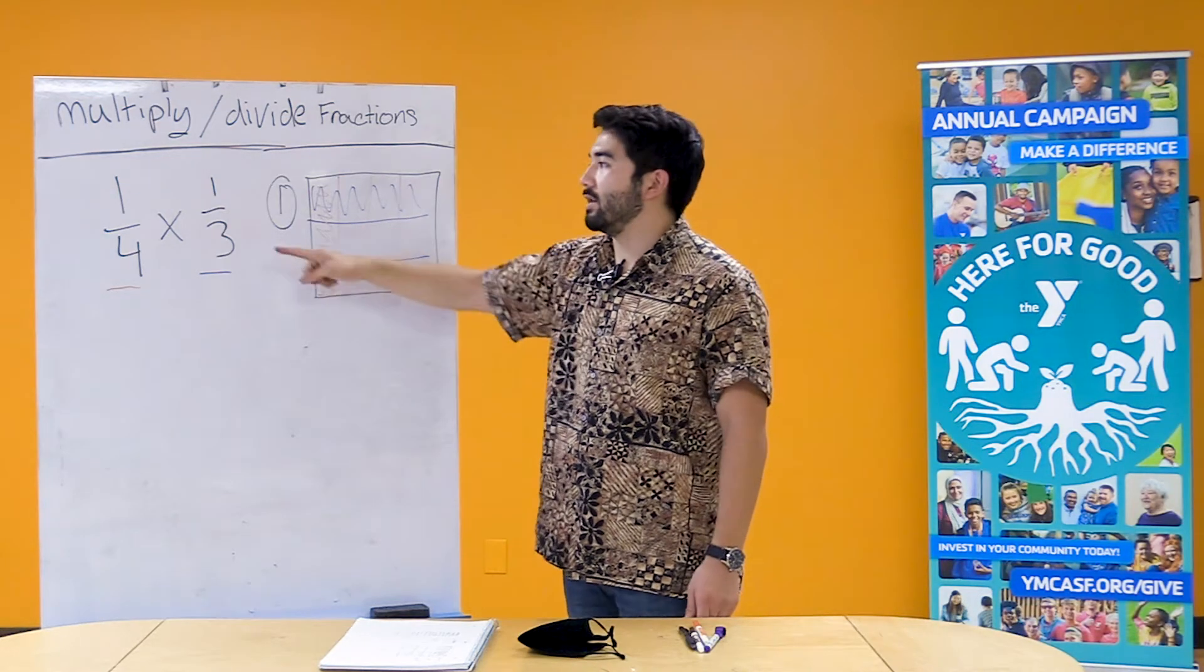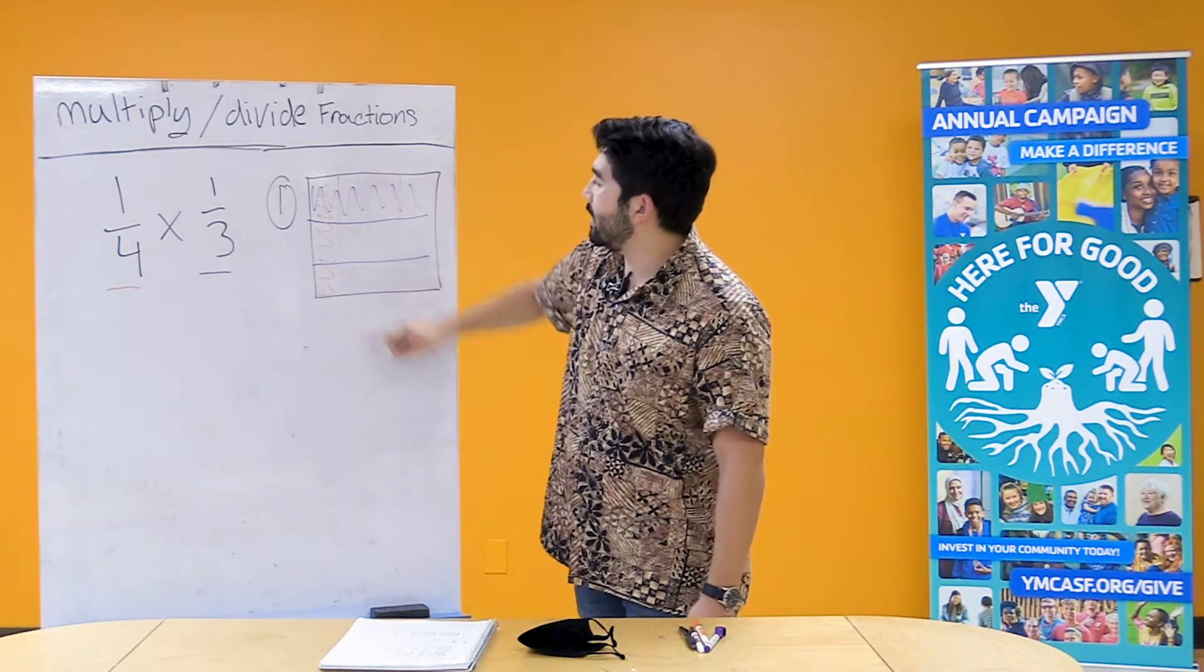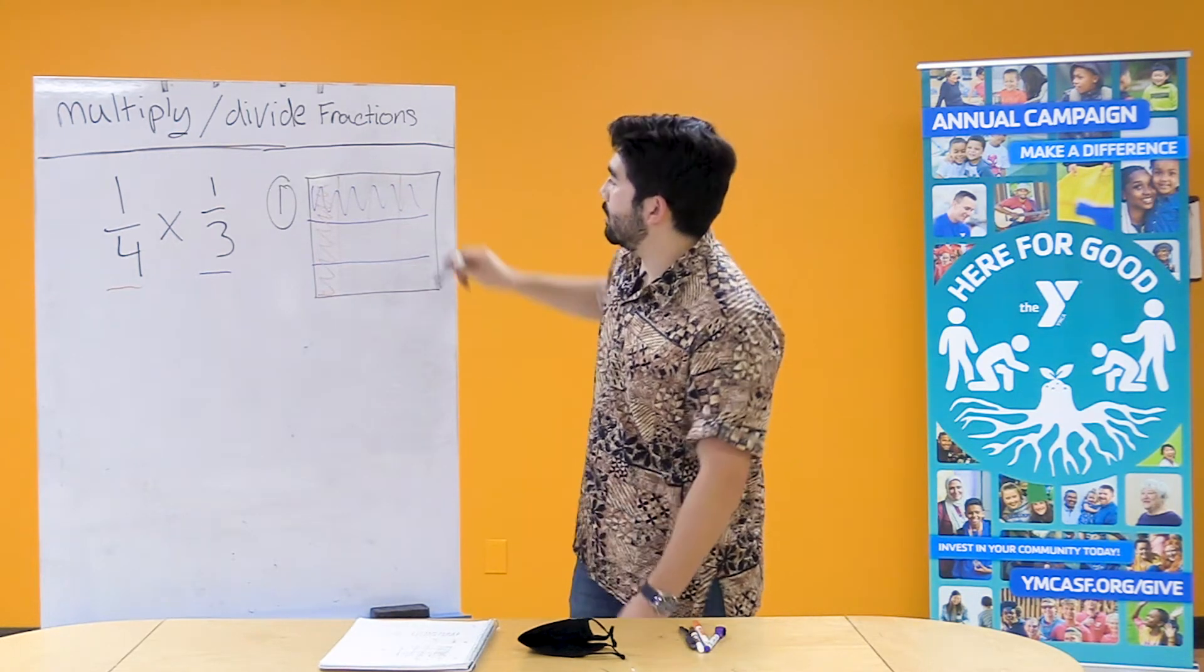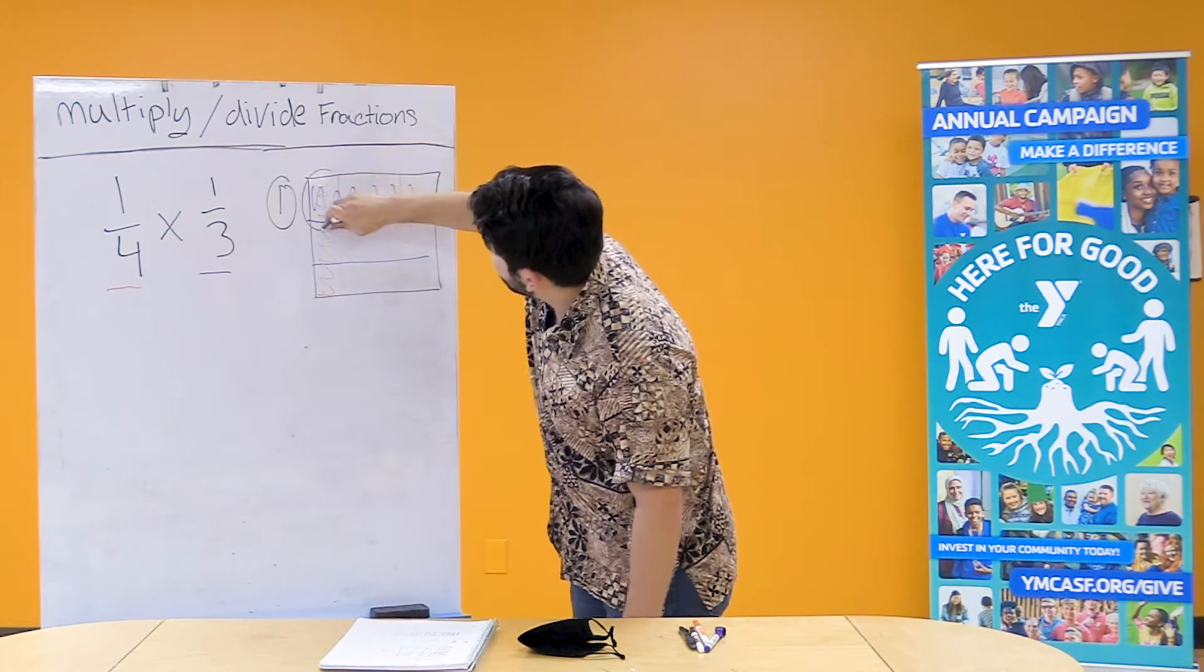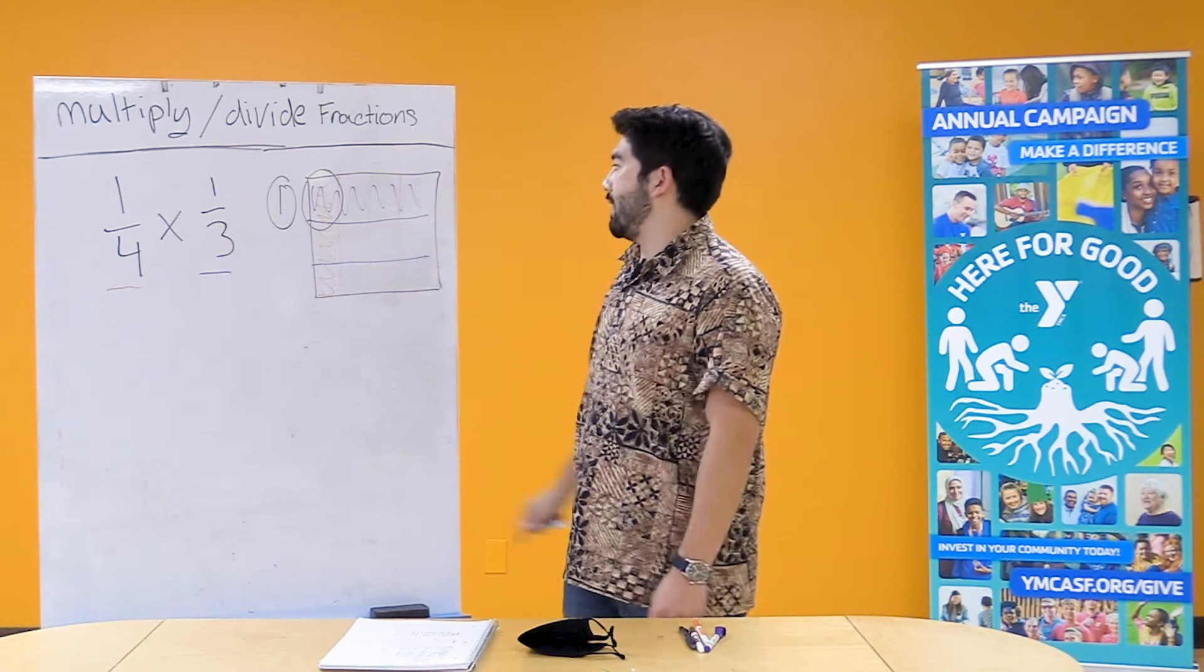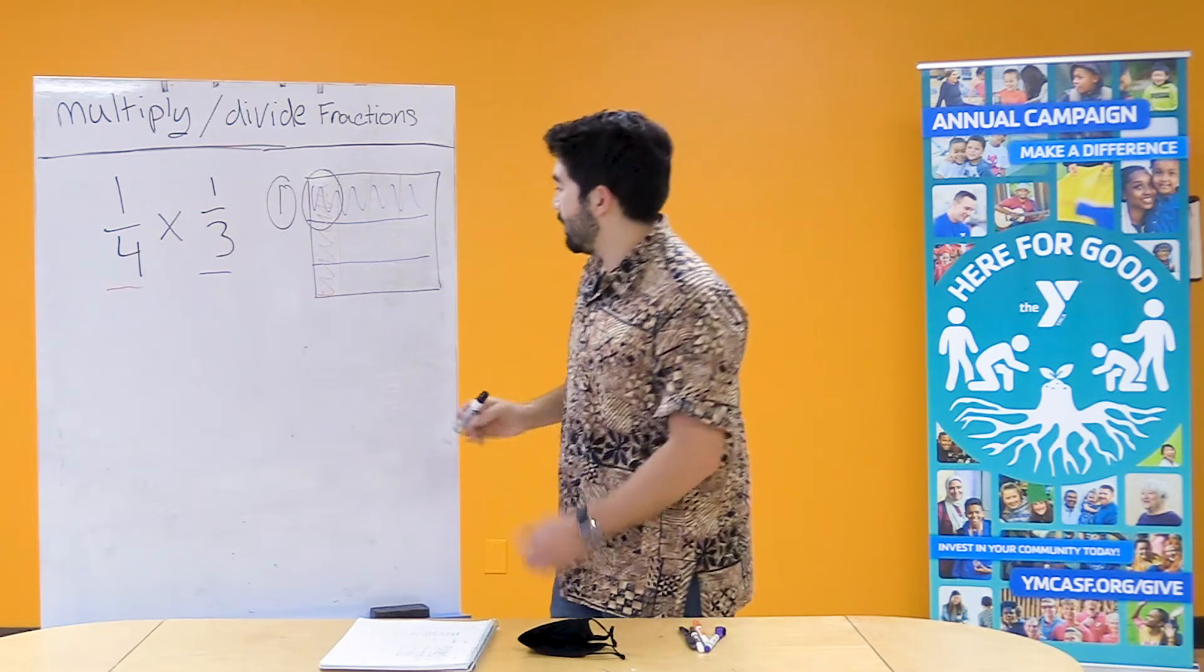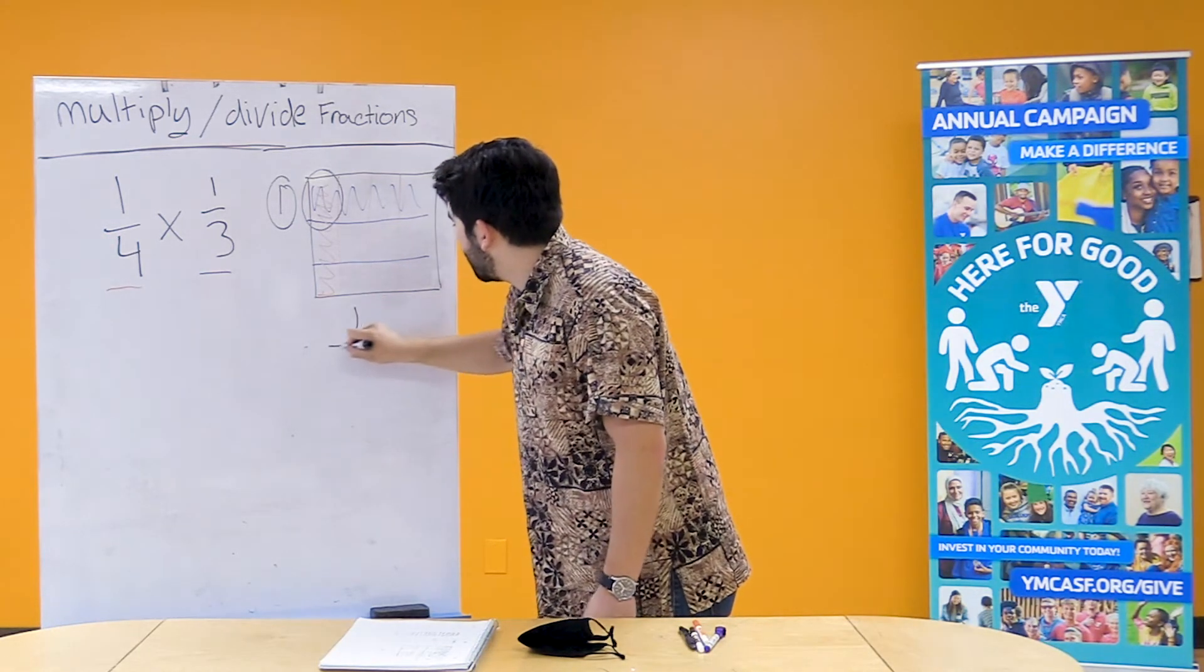and then we shaded in our individual boxes representing the two fractions. So here's our 1/4 shaded in. Here's our 1/3 shaded in. And what we're gonna do we're gonna look at where those two overlap. So they actually overlap on one box and that's gonna tell us our answer is 1/12.